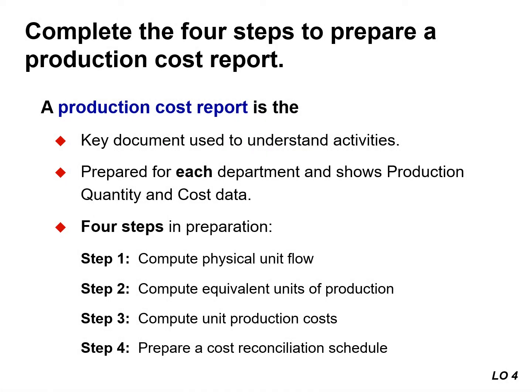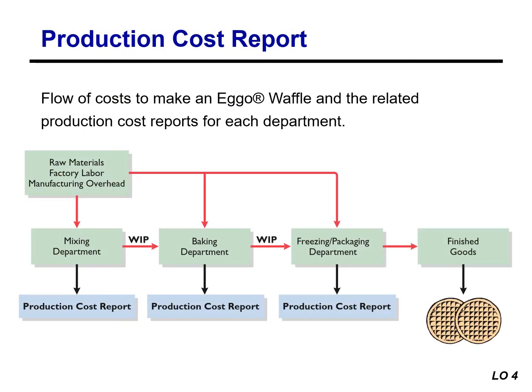A production cost report is the key document that management uses to understand the activities in a department. It shows both production quantity and cost data. In order to complete a production cost report, the company must perform four steps, which we will discuss in detail in this module. A production cost report is prepared for each department and shows both production quantity and cost data.